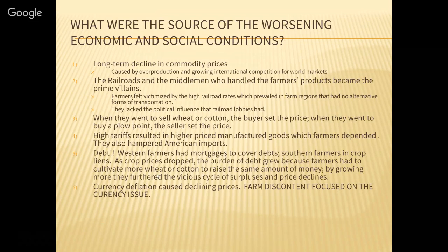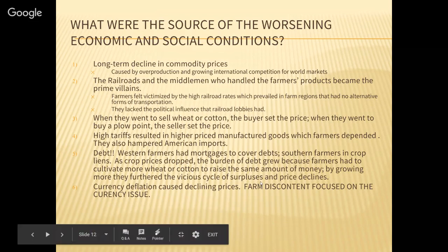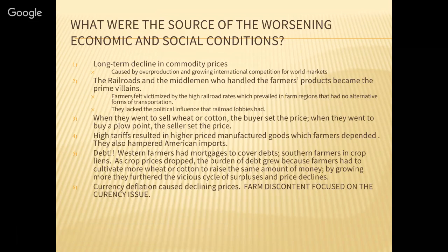What farmers would do is increase the amount of cultivation — plant more wheat, cotton, or corn to try to make more money. But that created surplus, and the higher the surplus, the more farm prices decline. The more you produce — overproduction — causes prices to fall. So it actually makes the debt issue worse. We've got a great deal of farm discontent.